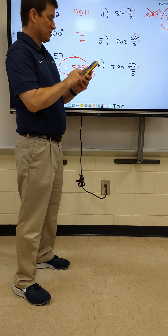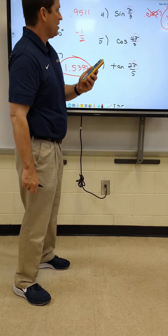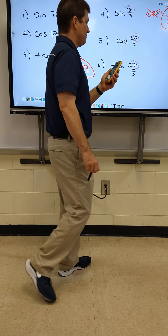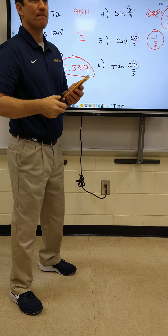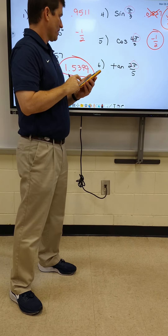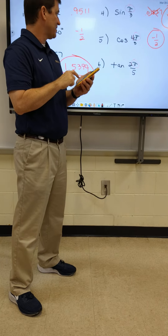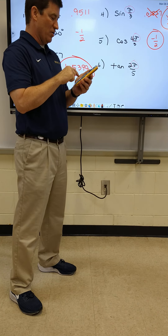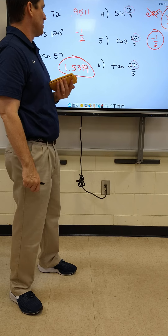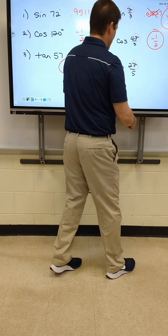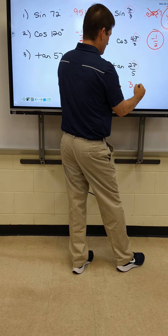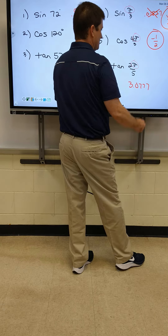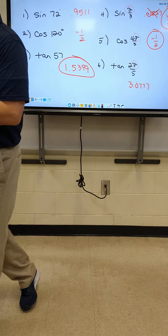Cosine of four pi over three. Sarah, what did you get on number five? Negative one and a half. Number six — tangent of two pi over five. Mallory, what did you get on number six? I got a decimal. Read it to me: 3.3077. Is everyone getting those correct answers? Do I need to come help anybody?